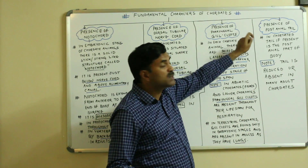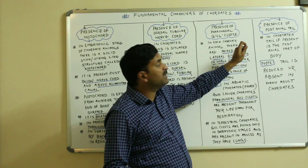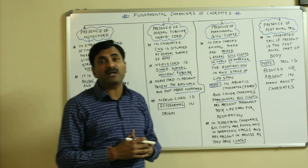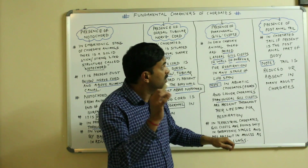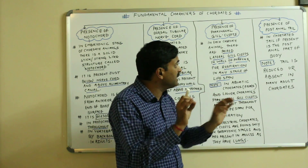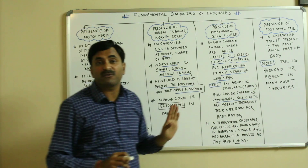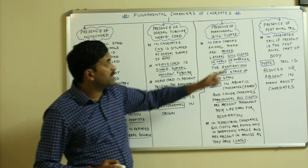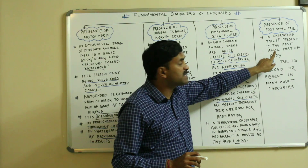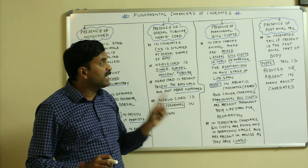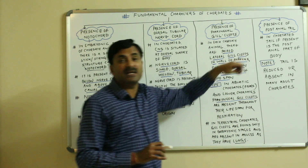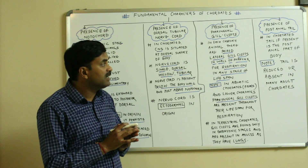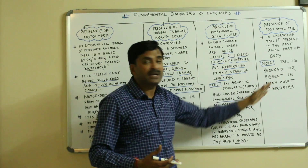The last fundamental feature is the presence of the post anal tail. This is a fundamental feature of the chordates. However, it is not necessary that a tail is present in all chordates — if a tail is present, then it is present in the post anal part of the body. In non-chordates, the tail was present in the pre-anal part, but here, if present, the tail is in the post anal part. The tail is reduced or absent in many adult chordates.